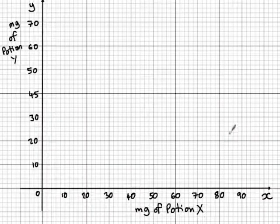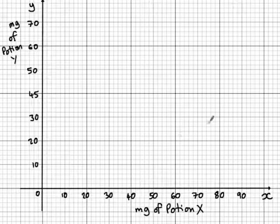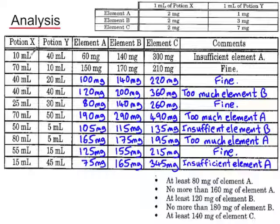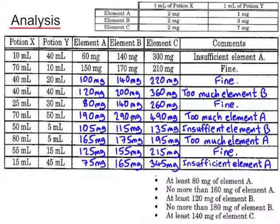Next I'm going to plot graphically the different values for X and Y, using two different colours: one for the combinations which were fine and the other for combinations which did not fit one or more of the criteria. The first one — 10ml of potion X and 40ml of potion Y — had insufficient element A, so I'm going to plot the point (10, 40) in red. Next I tried (70, 10) and that was fine, so I'll use blue for that one.